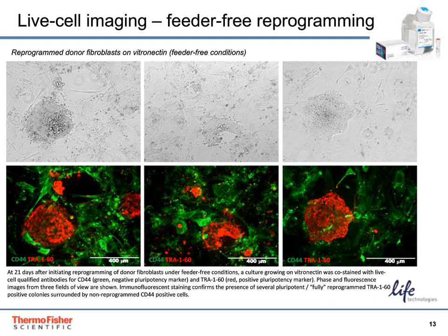This is an example of reprogramming using feeder-free conditions. At 21 days after initiating reprogramming of donor fibroblasts under feeder-free conditions, a culture growing on vitronectin was co-stained with CD44 and TRA160 antibodies. CD44 shows green fluorescence and is negative for pluripotency markers, and TRA160 shows red fluorescence and is positive for pluripotency markers. Phase and fluorescence images from three fields of view confirmed the presence of several pluripotent or fully reprogrammed TRA160 positive colonies surrounded by non-reprogrammed CD44 positive cells.